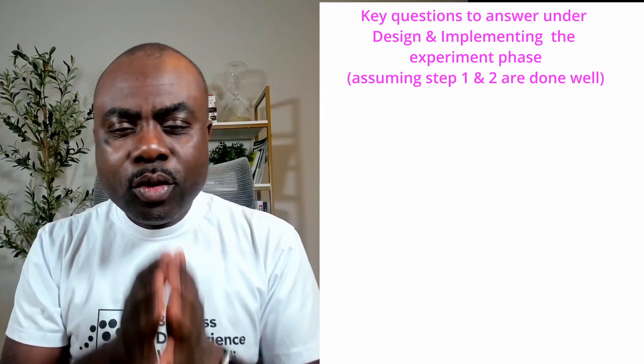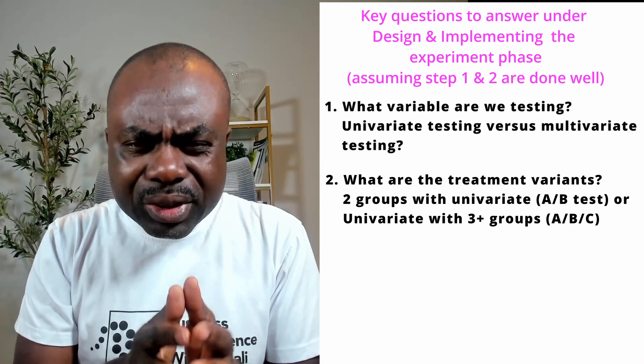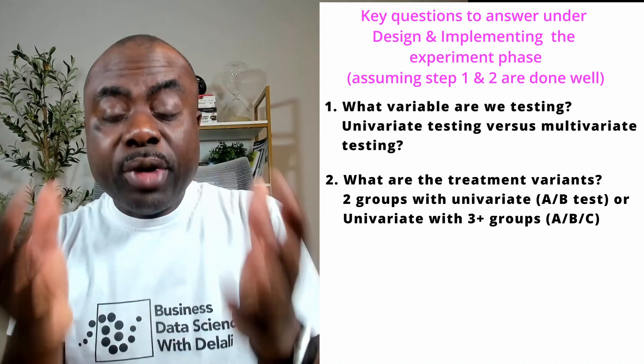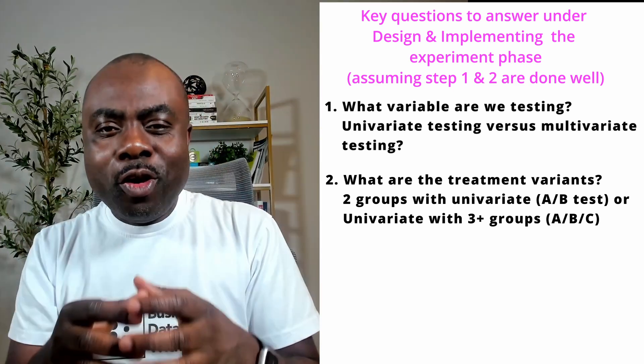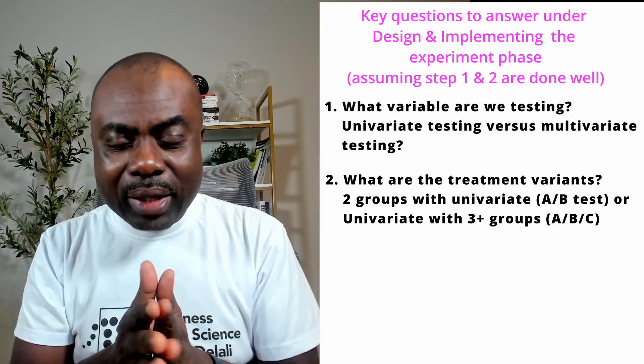Number two is: what are the treatment groups you are going to experiment on, or what are the levels of your variables? You need to determine what variable you are testing, and then what are the levels of that variable. If the variable is a marketing offer, the levels could be 10% off, 20% off, or buy one get one free — that could be three levels of the variable. This will help you understand how many treatment groups are needed for the experiment.